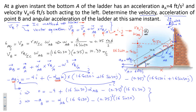Solving these two equations, we find alpha_AB equals 1.47 radians per second squared, and the acceleration at point B equals 24.9 feet per second squared. We see that we end up with positive numbers, which means our initial assumptions about the directions were correct.